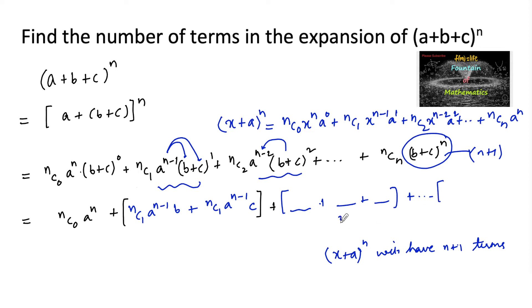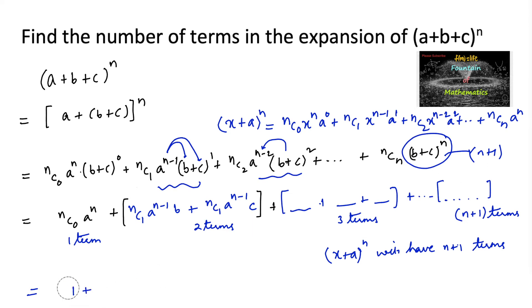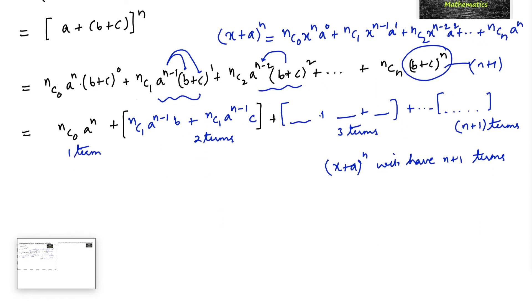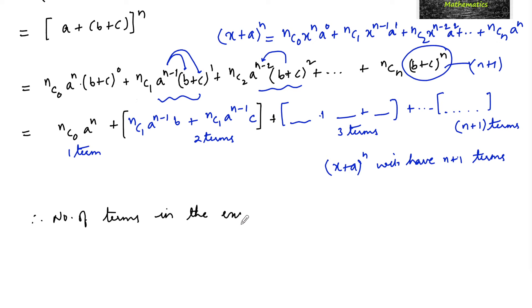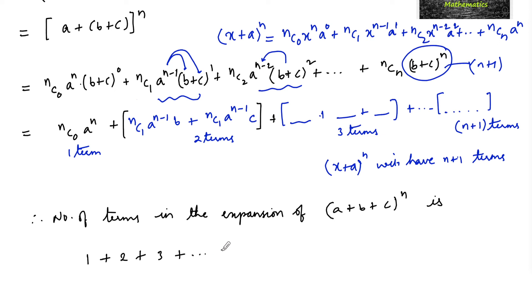So the last group will have n+1 terms. In total, the number of terms in the expansion of (a + b + c)^n is: 1 + 2 + 3 + ... and so on up to n+1 terms. We need to find the sum of first n+1 natural numbers.